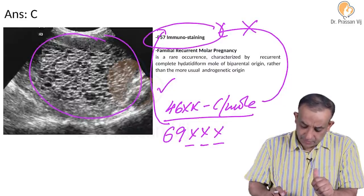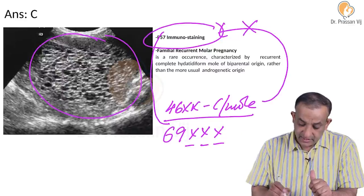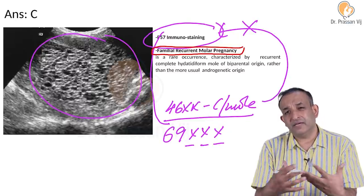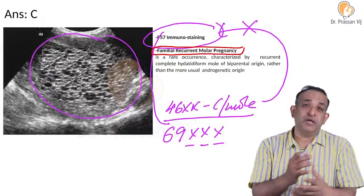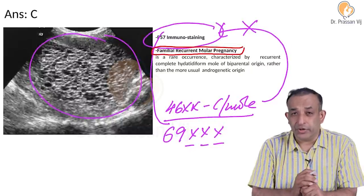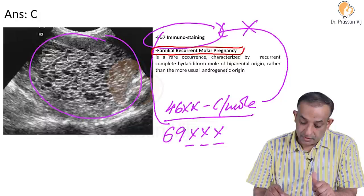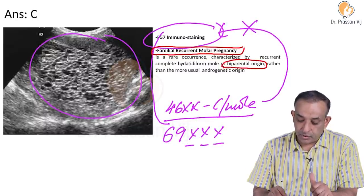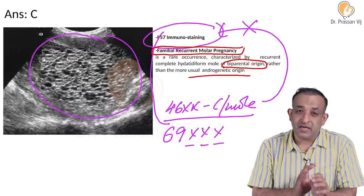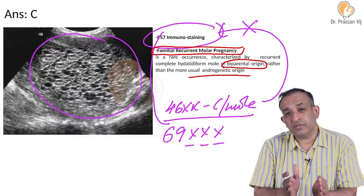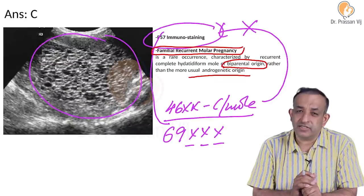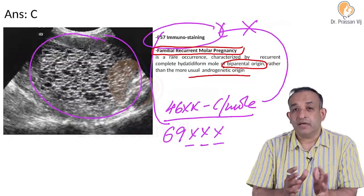Another thing to know is familial recurrent molar pregnancy - a new topic that may come in your exams. It is about familial recurrence of a hydatidiform mole. This does not follow the usual patterns because it is classically due to a bi-parental origin rather than the usual androgenetic origin. In familial recurrent molar pregnancy, there may be contribution from both parents, not just from the father as seen in a complete mole.